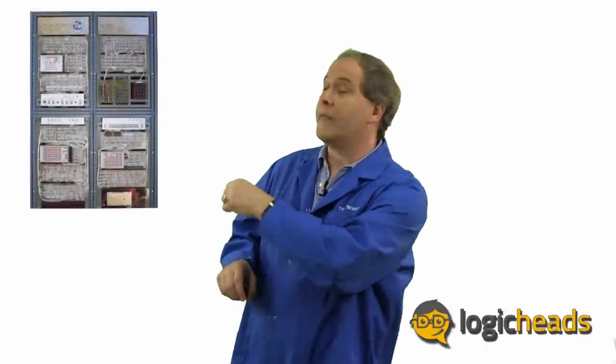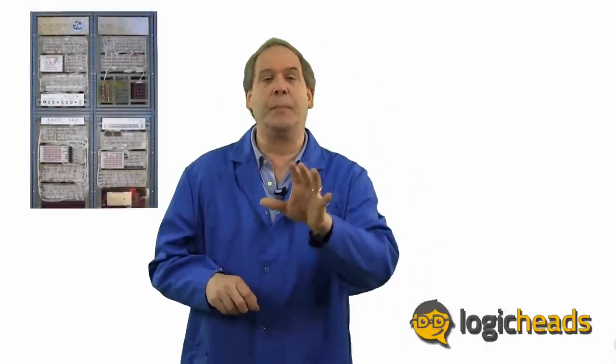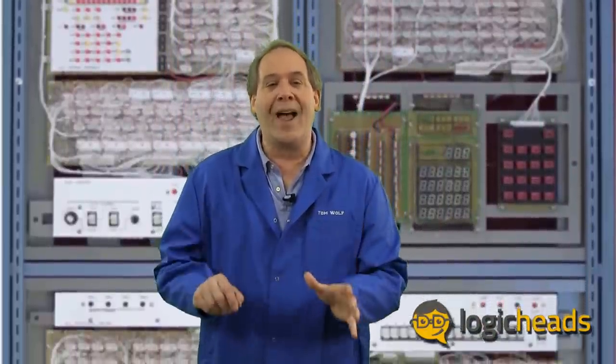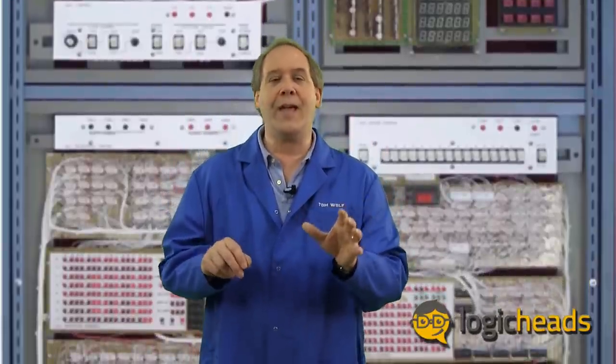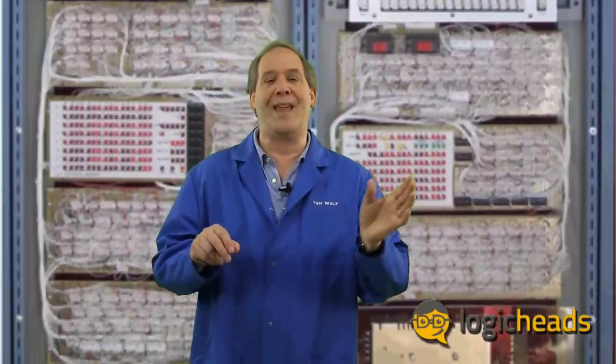This is a replica of the Apollo Guidance Computer, as built by John Poltorek. You can find more information on the web. It takes up the equivalent of four 19-inch equipment racks, but it is absolutely tiny by 1960 computer standards. Its specifications are like this: It has a 1 MHz clock, 1K of RAM, and 12K of ROM. You probably can't even buy a part that small today, and it would cost a few cents if you could.